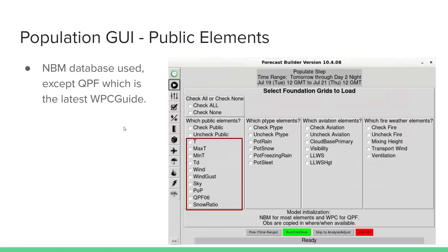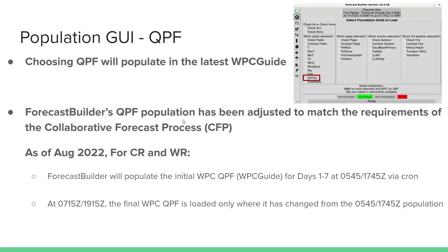For the public elements, the NBM database is used except for QPF. For QPF, Forecast Builder's QPF population has been adjusted to match the requirements of the Collaborative Forecast Process (CFP). As of 2022, for central and western region, Forecast Builder will populate the initial WPC QPF guide for days 1 through 7 via CRON at 545Z and 1745Z. Then later at 1715Z and 1915Z, the final WPC guide is loaded only where it has changed from the 545/1745Z populations.